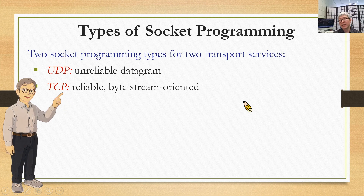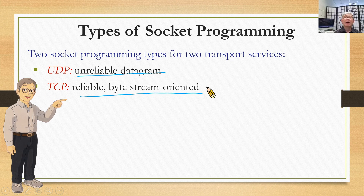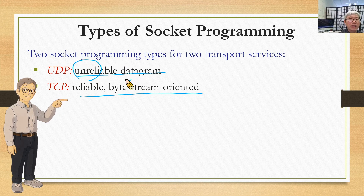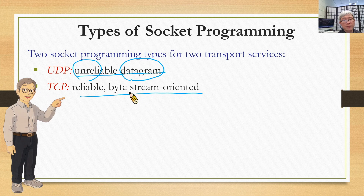Types of socket programming. We have two types. One is unreliable datagram, and the other is reliable byte-stream oriented. We will use datagram with a name to define the socket for UDP programming, and TCP will use stream to define the socket for TCP.